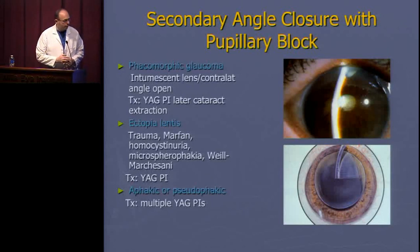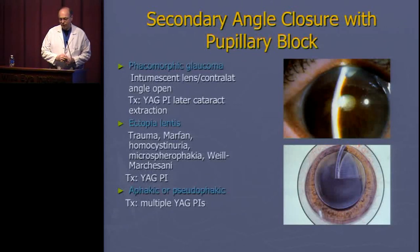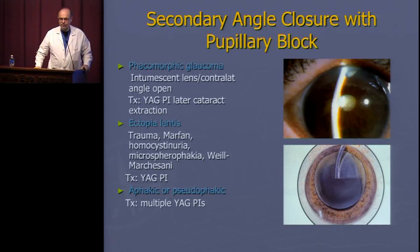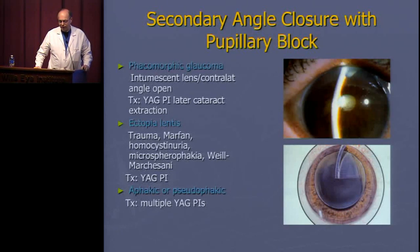Here are listed all the reasons why you can get a secondary angle closure with a pupillary block. In the emergency room especially, you'll see phacomorphic glaucomas coming in — people with intumescent, very advanced cataracts. You can tell these apart from primary angle closure by looking at the contralateral eye, which, if it were phakic, would have an open angle.